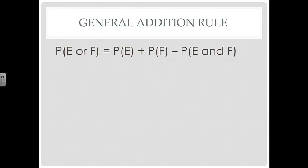The general addition rule is very similar to what we just did with mutually exclusive events, but it can also be used when events are not mutually exclusive — when they can both occur at the same time. The probability of event E or event F still equals the probability of E plus the probability of F, but then we subtract the probability of them occurring at the same time. An example is the probability of drawing a queen or drawing a club from a regular deck of cards.